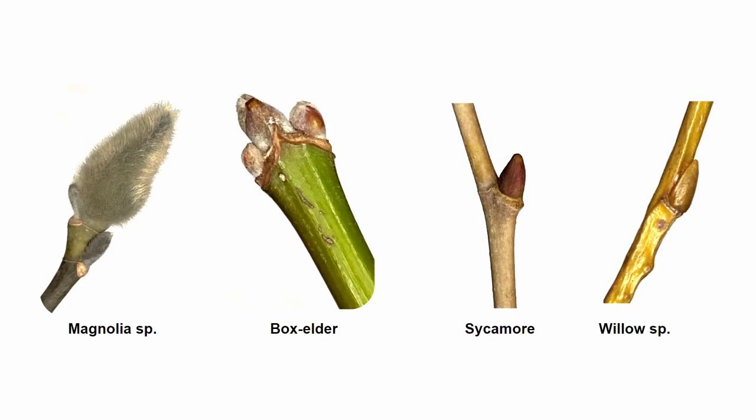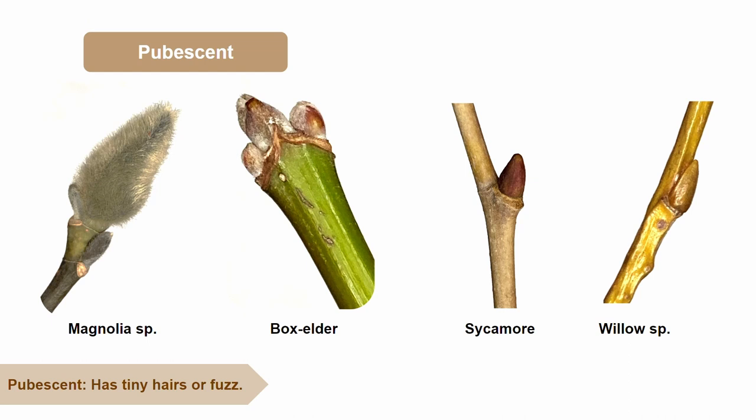Earlier I mentioned pubescent — but what does pubescent mean? It refers to a part of a plant that has tiny hairs or is fuzzy. The apical bud of a magnolia twig is highly pubescent. But sometimes pubescence can be difficult to spot. For instance, the apical bud of a box elder is not super fuzzy, but it still has visible white hairs. This makes a box elder pubescent, just not as pubescent as a magnolia.